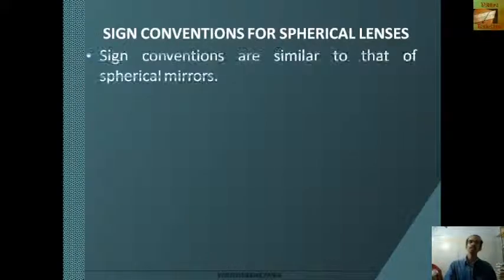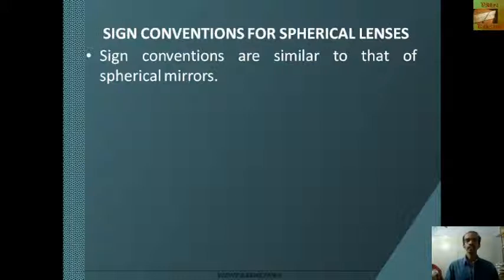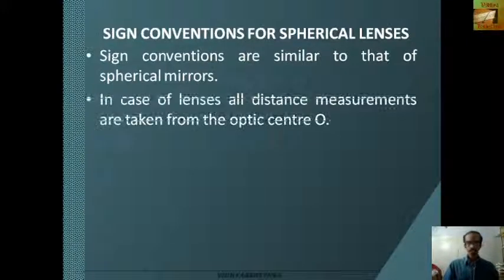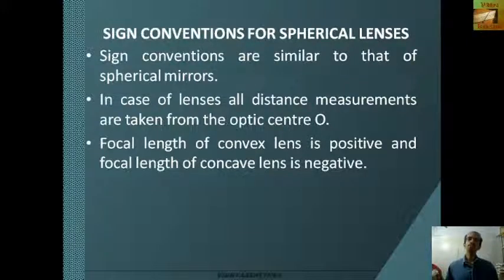Sign conventions for spherical lenses are similar to those of spherical mirrors. Light rays always appear to come from the left side; directions towards the right are positive while directions towards the left are negative. Inverted images are negative while erect images are positive. In case of lenses, all distance measurements are taken from the optic center O. The focal length of a convex lens is positive and the focal length of a concave lens is negative.